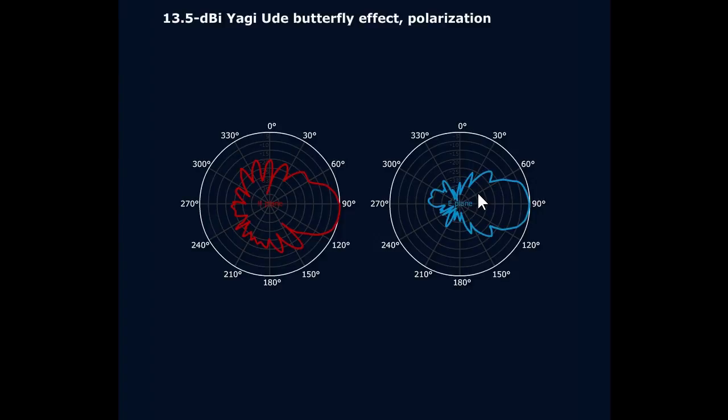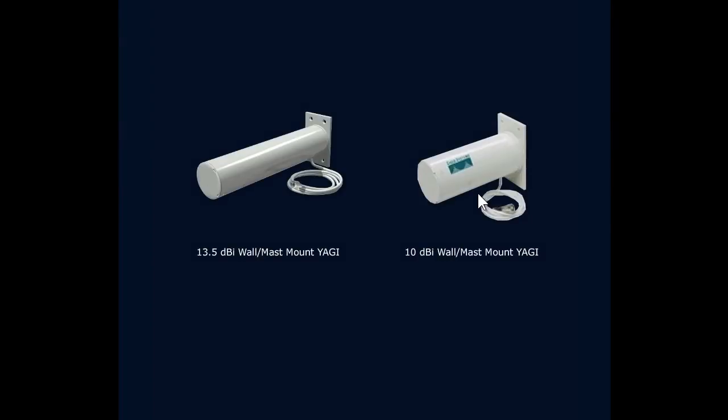Now another type of antenna is called the Yagi antenna, named for Yagi and Uda, a couple of Japanese gentlemen who came up with this antenna back in the 20s. Let me show you what it looks like. Okay, it looks like an antenna, right? Not that exciting.